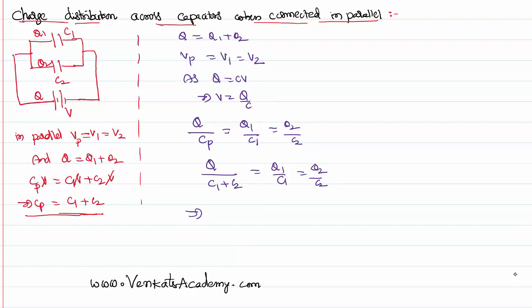That implies, by equating the first two terms, Q1 could be written like Q into C1 divided by C1 plus C2.